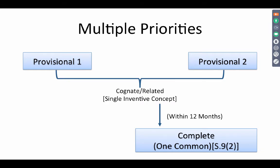You could have multiple priorities that come from different provisionals when you file a complete specification. Say you file provisional 1 and after some time you file provisional 2. If provisional 1 and 2 are related by a single inventive concept, or they are cognate — they are related — within 12 months you can file a common complete. This is what Section 9.2 says.